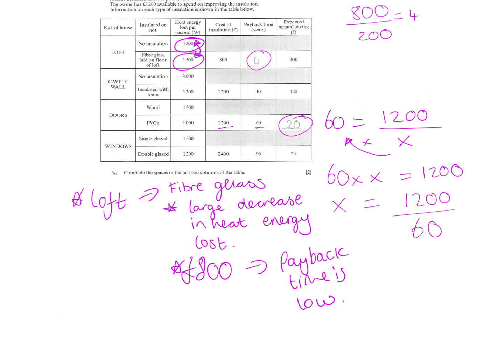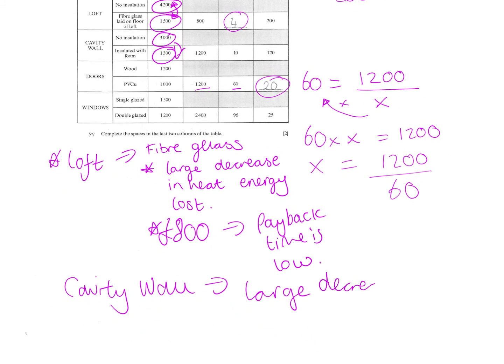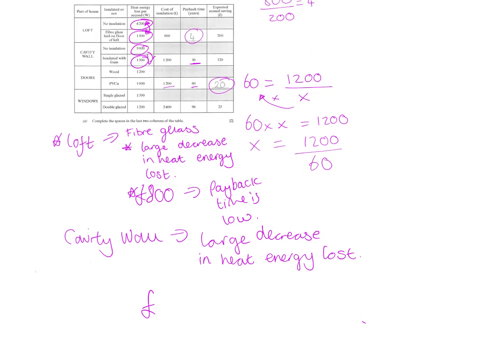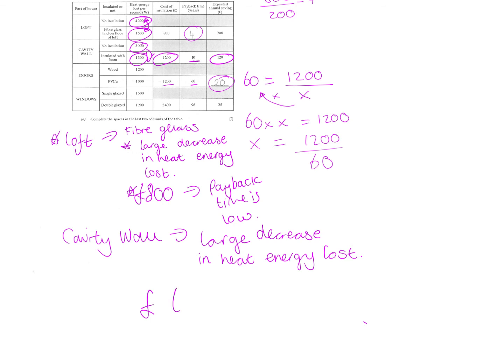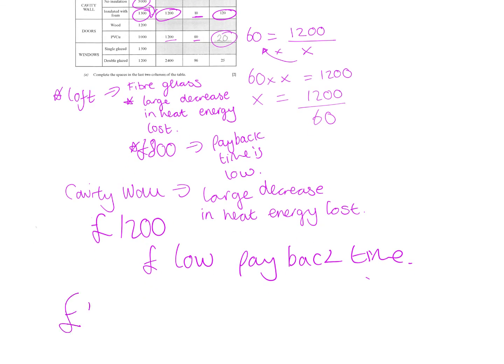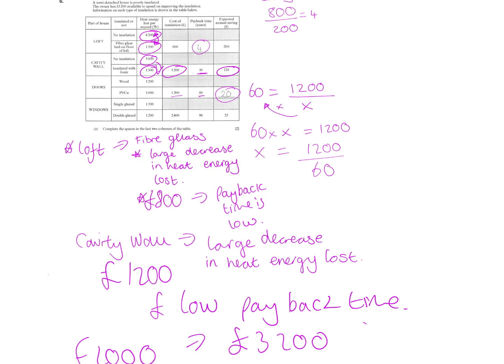The next one I would definitely think of employing would be the cavity wall. That would be where I'd spend my money next. The reason for this is there's a large decrease in heat energy loss. This one does take a little bit longer - payback time is 10 years, but for the price of it, you are earning your money back. So it's still got quite a low payback time. Because that costs £1,200, if I add that I've now spent £2,000. He has got £3,200 to spend, so he has got £1,200 left.